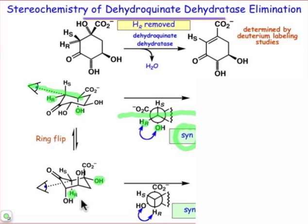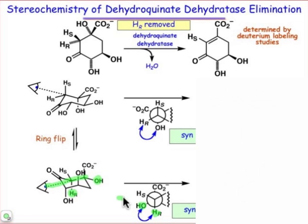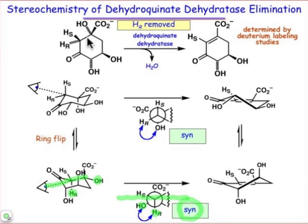Similarly, in this other ring-flip form, we get the exact same answer as we must, but we need to go through that process and convince ourselves of that. Looking down the carbon-carbon bond that becomes the carbon-carbon double bond, HR and OH are on the same side of what will become the plane of that double bond. Again, we conclude it's a syn elimination. Now, with ring compounds, because there isn't this conformational flexibility, it's really quite easy to pick this up, and it's a little bit more challenging in these open chain conformations where you have to find the right conformation that proceeds by the elimination.